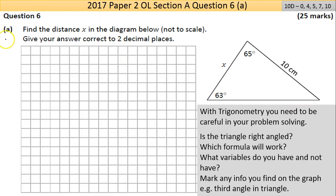We're here now in Question 6 from 2017 Paper 2, Ordinary Level Maths. This question is worth 25 marks, so 10 marks you can pick up. Part A says find the distance X in the diagram below, not to scale. Give your answer correct to 2 decimal places. There's X on your triangle.